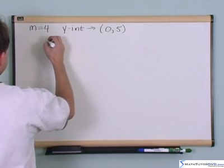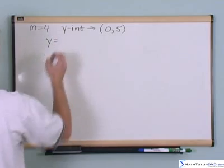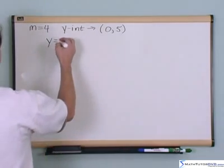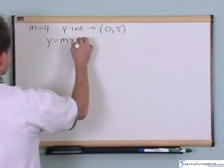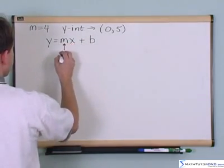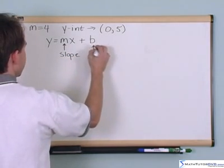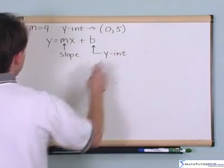Just to jog your memory, the general form of what I consider the easiest equation of a line formula to remember is y equals mx plus b, where m is the slope like we've already said and b is what we call the y-intercept.